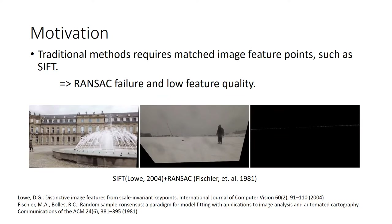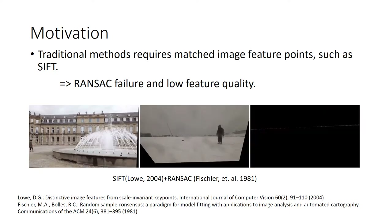Traditional homography estimation methods require explicitly matching image feature points. Then a RANSAC outlier rejection step is conducted to maximize the matching rate for the feature points. If RANSAC fails or the scene provides low-quality features, the homography will be estimated with error.